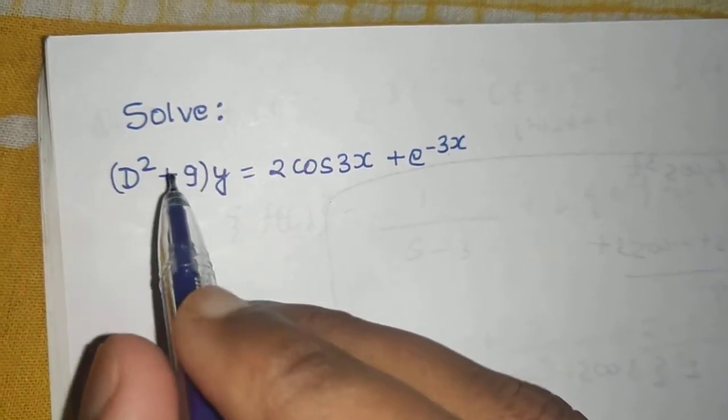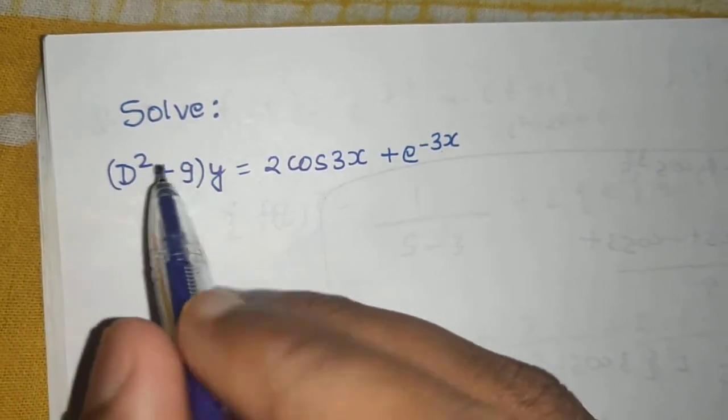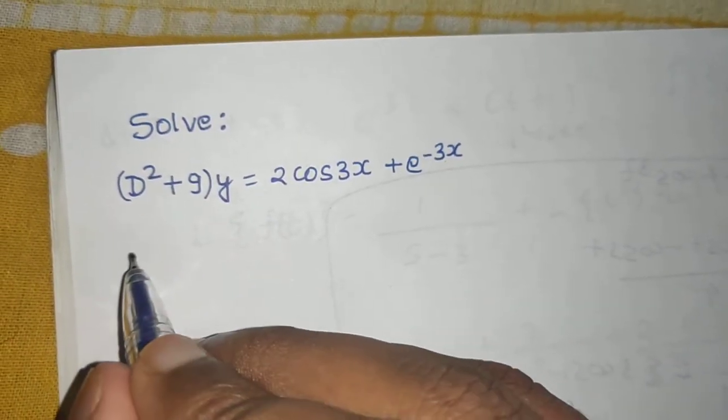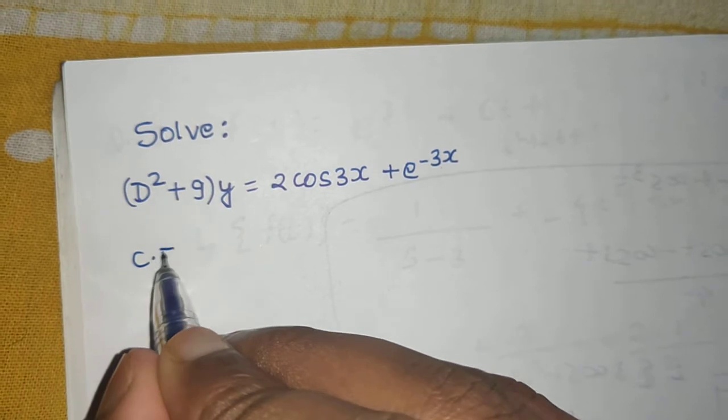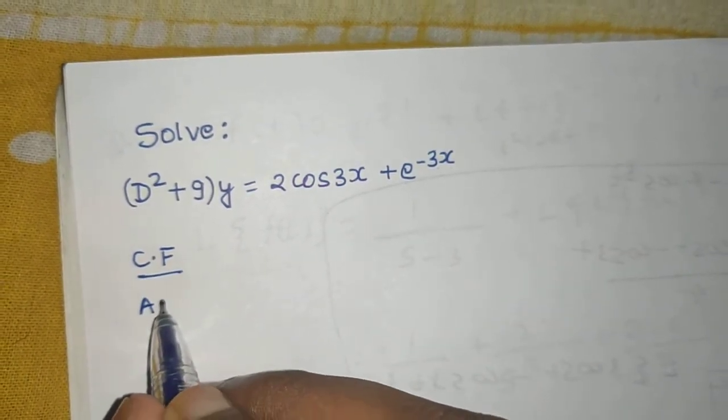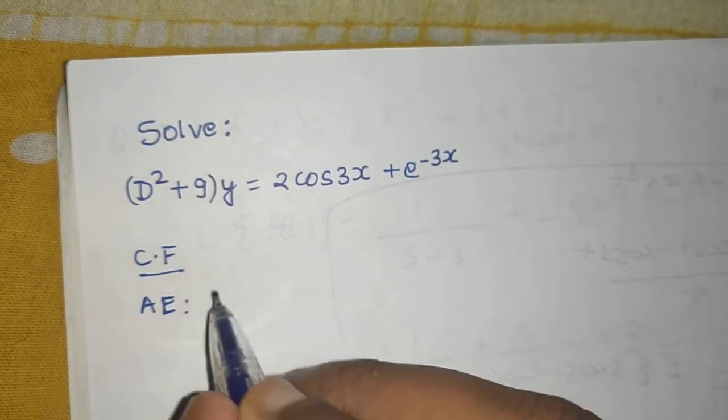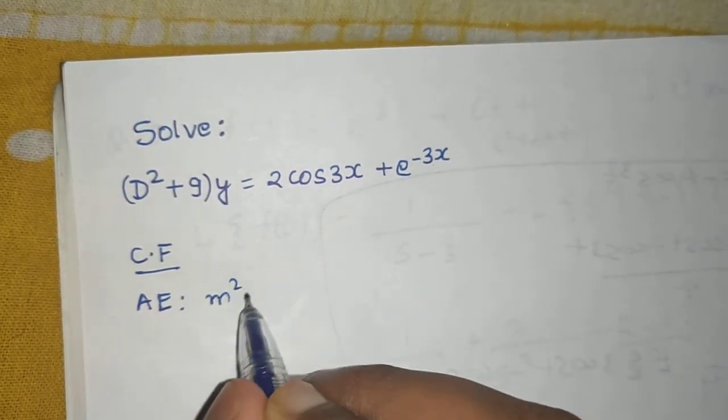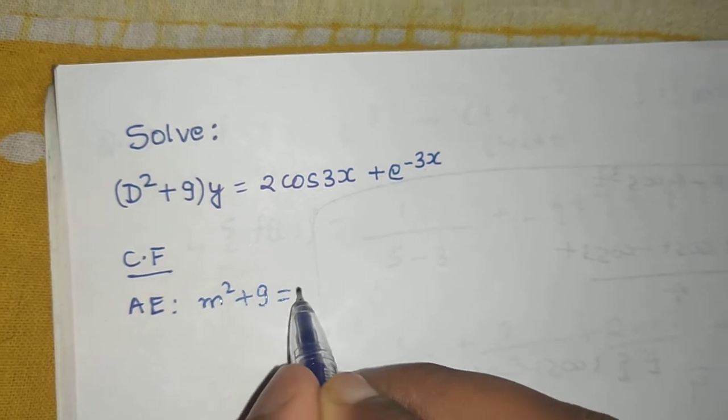Convert this from D form to m form. So for the complementary function, first find the auxiliary equation. Auxiliary equation will be m squared plus 9 and equate it to 0.